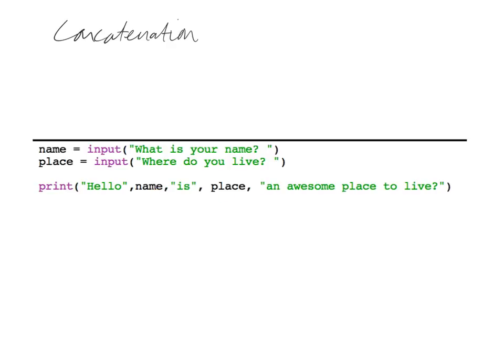For example, it could be: 'Hello Bob, is Bedford an awesome place to live?' — of course the answer would be yes. So we've got the two strings and we're simply concatenating them together, or adding them together, and that's what concatenation is.